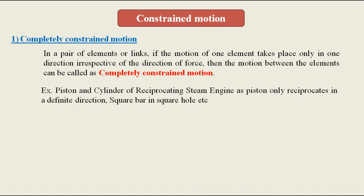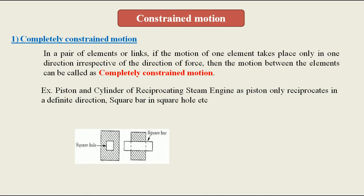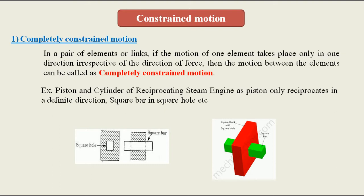Another example is a square bar in a square hole. The piston inside the cylinder only reciprocates — it doesn't rotate — so the motion between piston and cylinder is completely constrained motion. Similarly, a square bar inserted inside a square hole will only reciprocate and cannot rotate because of the square shape, so the motion between these two components is called completely constrained motion.